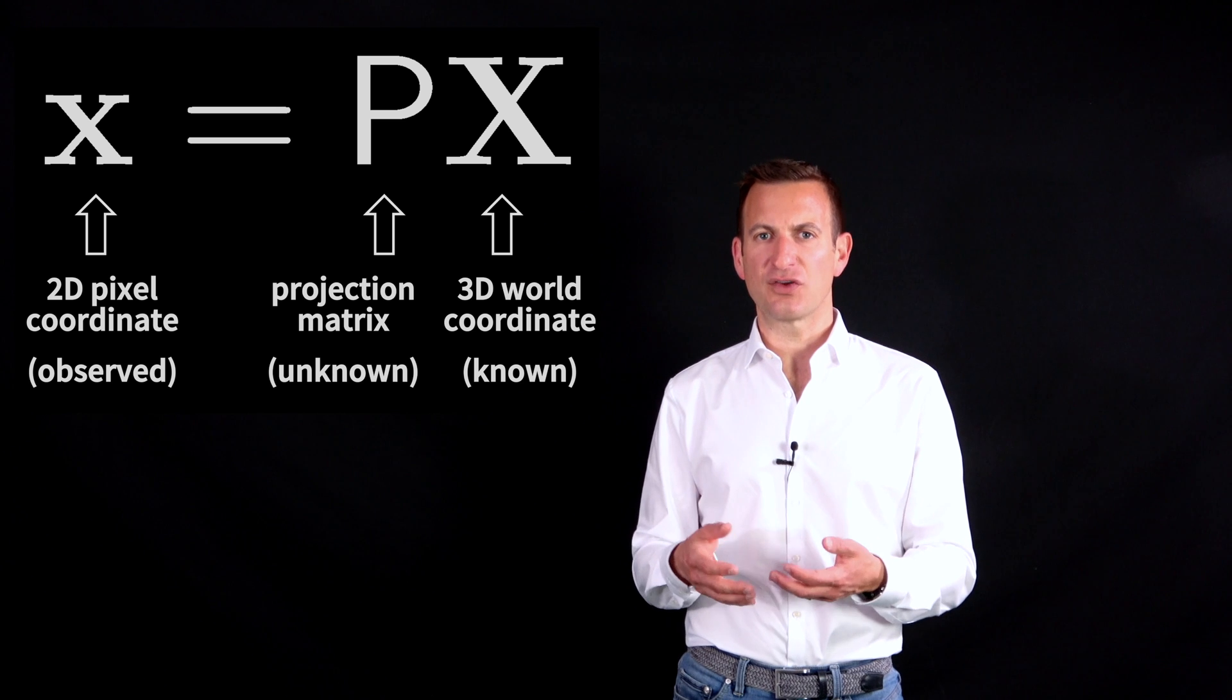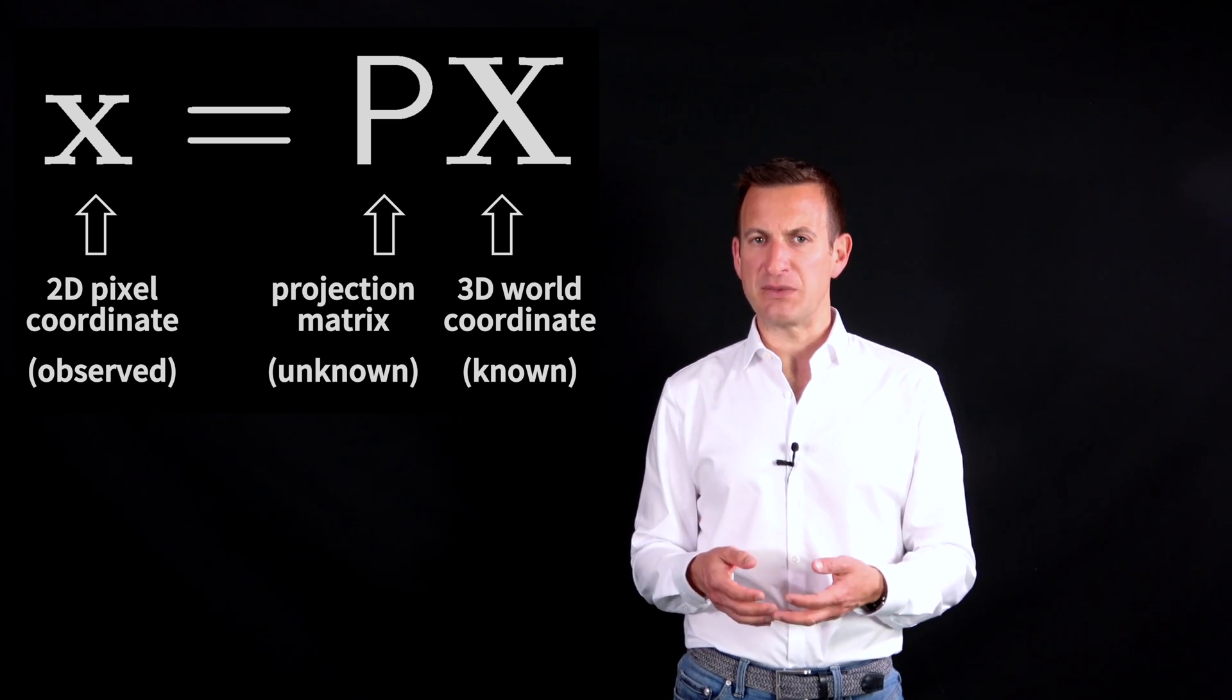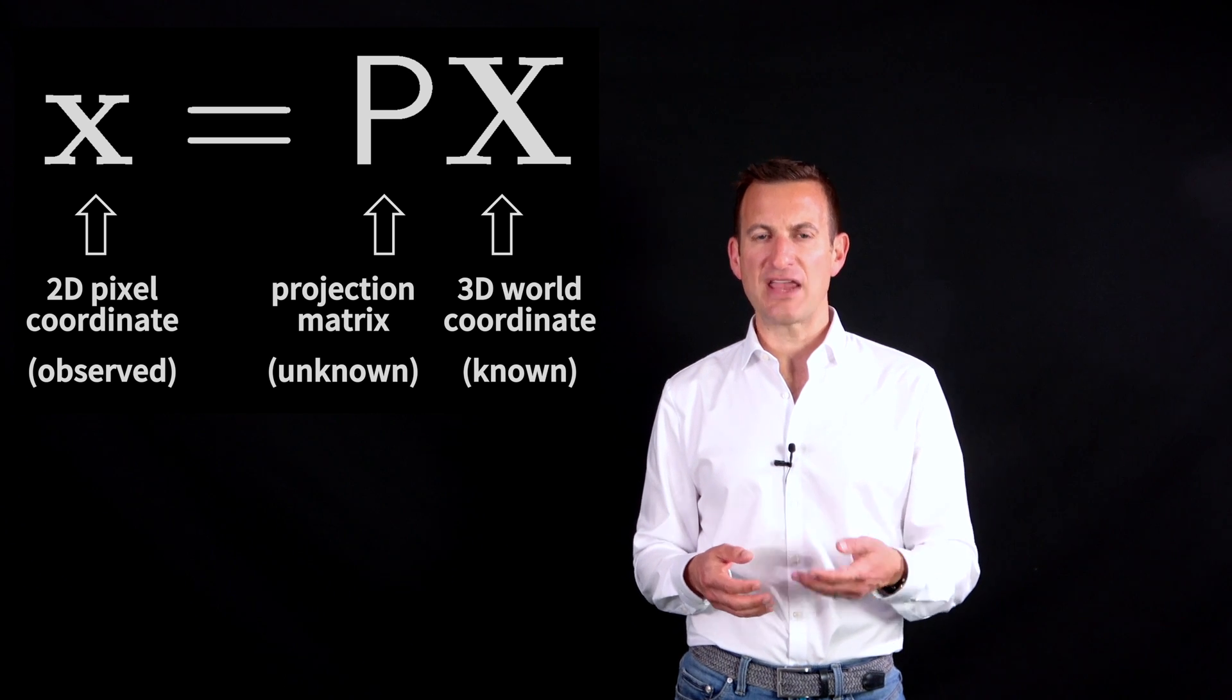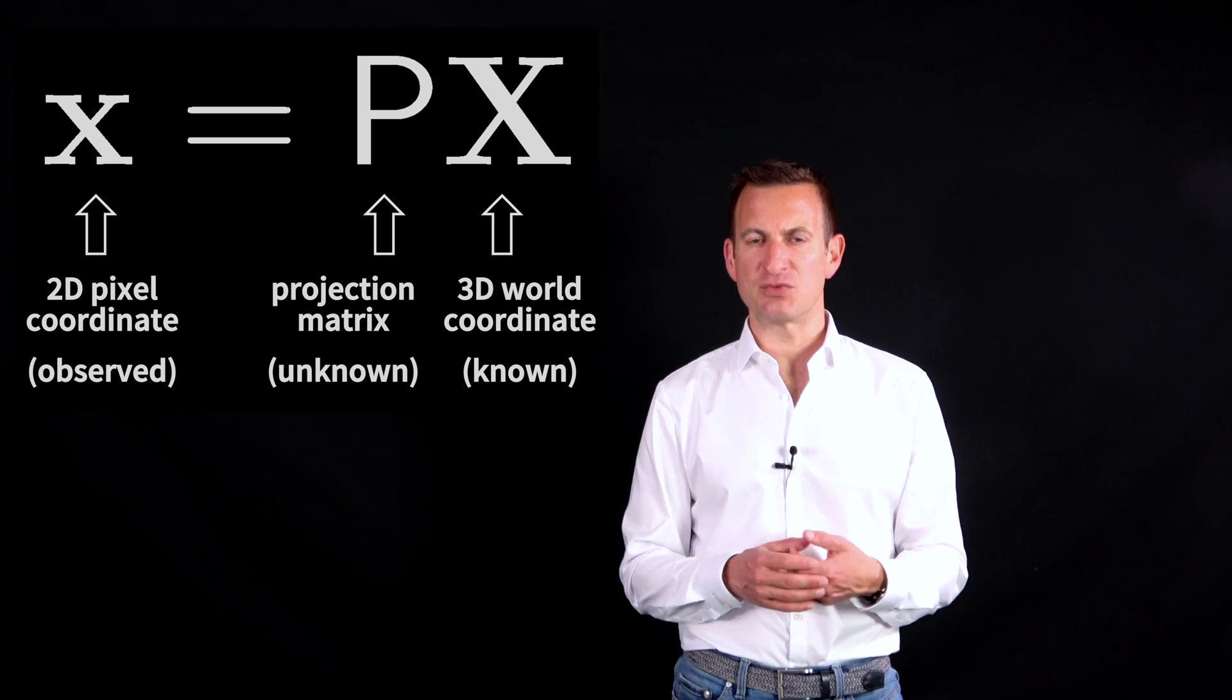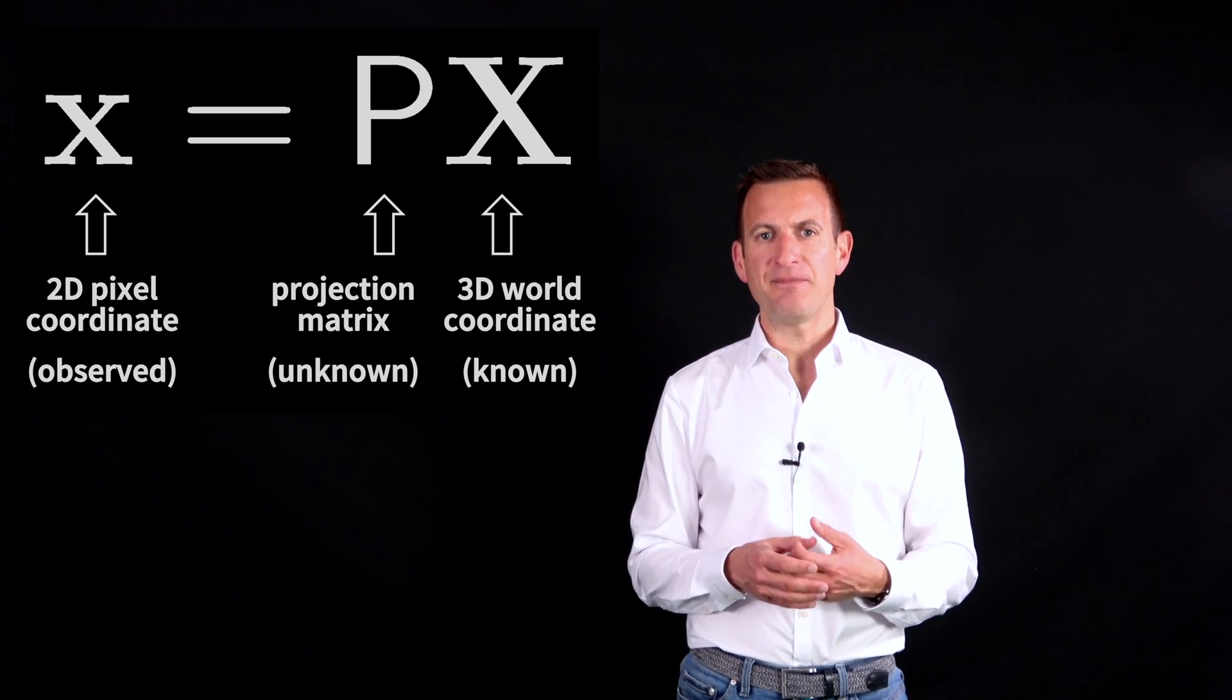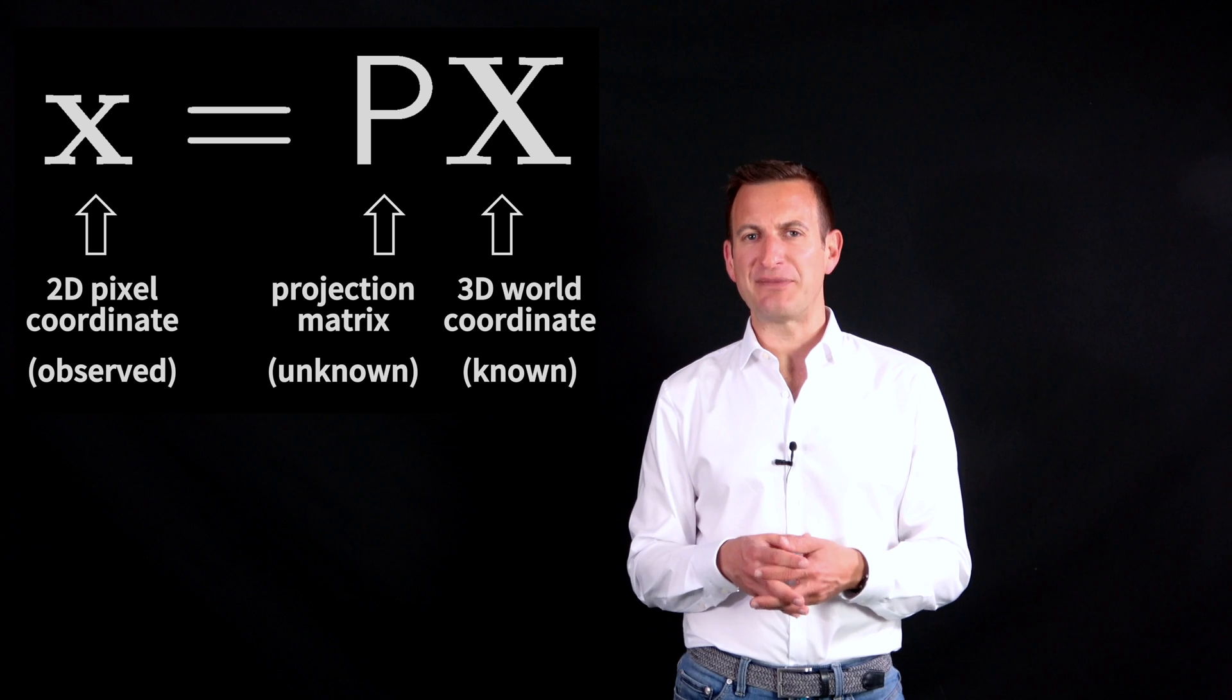Uppercase X is a location of a point in the 3D world, so an XYZ coordinate. Lowercase x is a location where this point is mapped to in my 2D image plane, so an xy coordinate. And the matrix P is a matrix that actually describes this mapping.